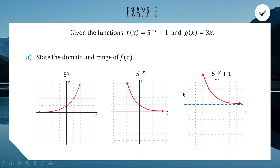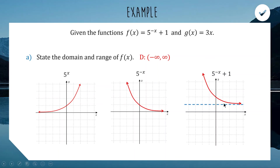For the domain — the x values — the curve never stops going left or right; there is no x value you can't substitute in. So the domain is all real x. For the range — the y values — the curve goes up to infinity, but we never cross the asymptote at y equals 1. So the range is from 1 to infinity, not including 1 because we only approach that dotted line and never actually touch it.